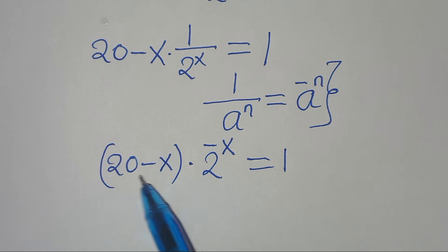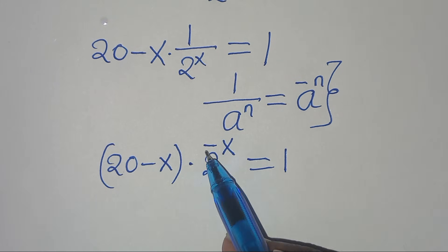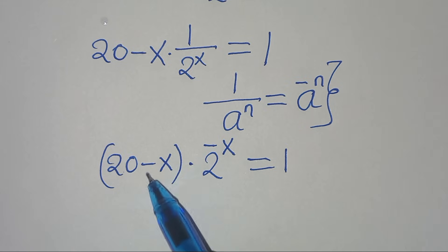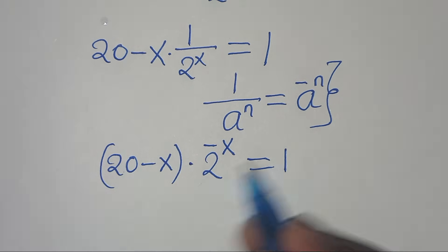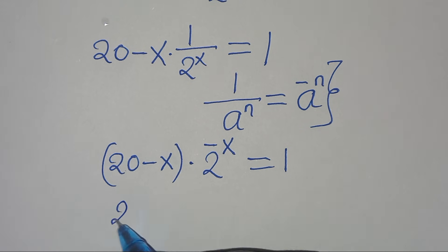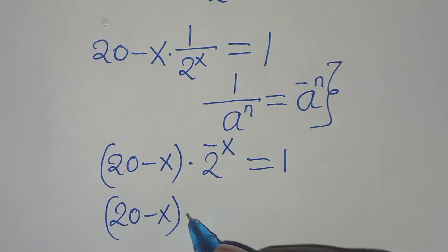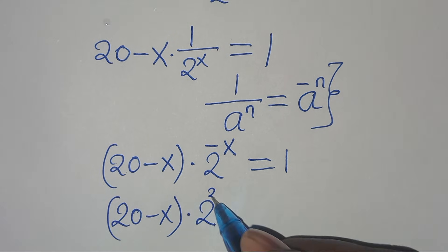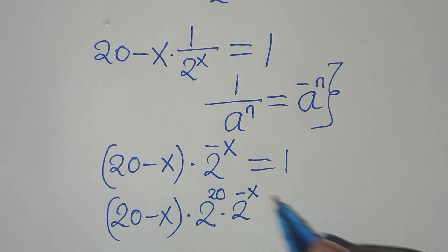If you check the coefficient here, we have 20 minus x, and the exponent is minus x, so we need to have an exponent with the power of 20. This means we multiply both sides by 2 to the power of 20, giving us (20 minus x) multiplied by 2 to the power of 20 multiplied by 2 to the power of 20.